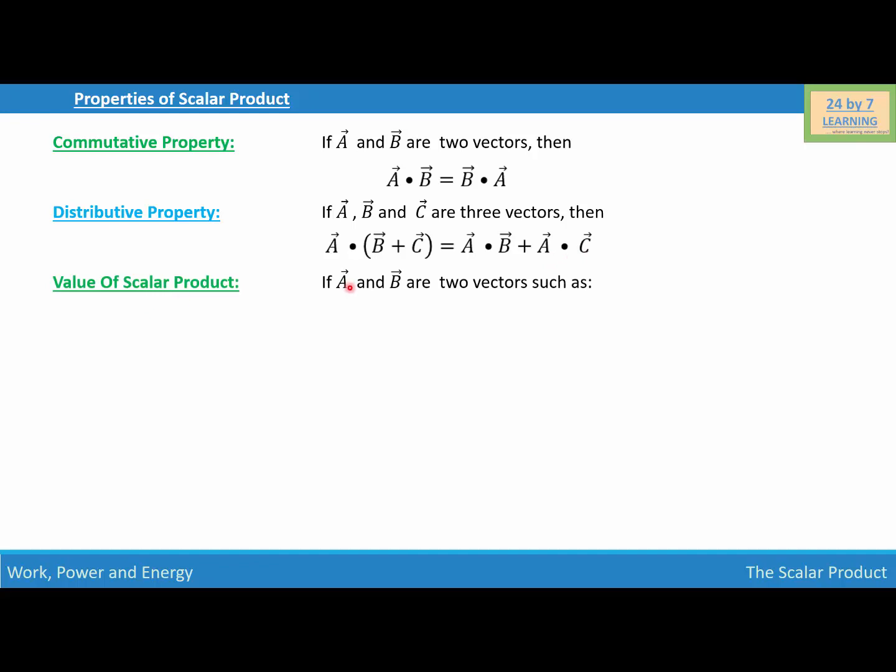Value of a scalar product. If vector A and vector B are two vectors such that vector A equals A1i plus A2j plus A3k and vector B equals B1i plus B2j plus B3k, then vector A dot vector B is equal to... I am writing the magnitude of vector A which is over here dot magnitude of vector B which is over here.